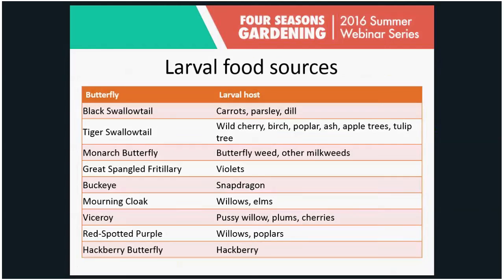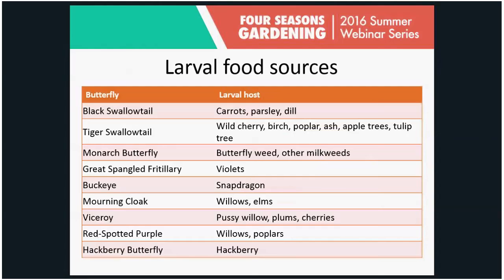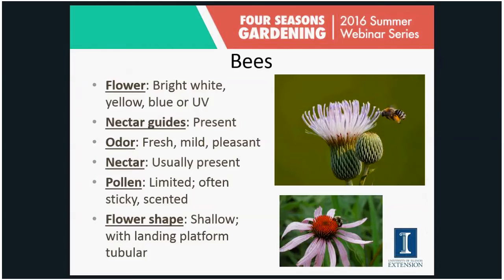Monarchs will only feed on milkweed, so if you want monarchs you need to have milkweed. Buckeyes feed on snapdragons; viceroys on pussy willows, plums, and cherries; tiger swallowtails on quite a few other plants. Some species only feed on one or two types of plants. If you see a caterpillar on a plant, consider leaving it — that caterpillar is eventually going to grow up to be a butterfly or moth, so don't kill every caterpillar you see.